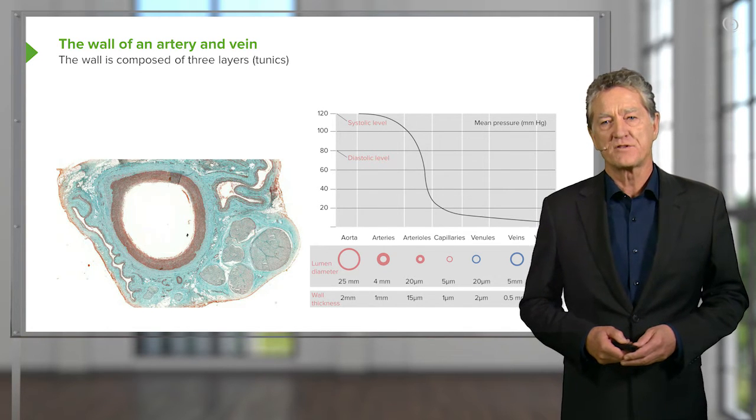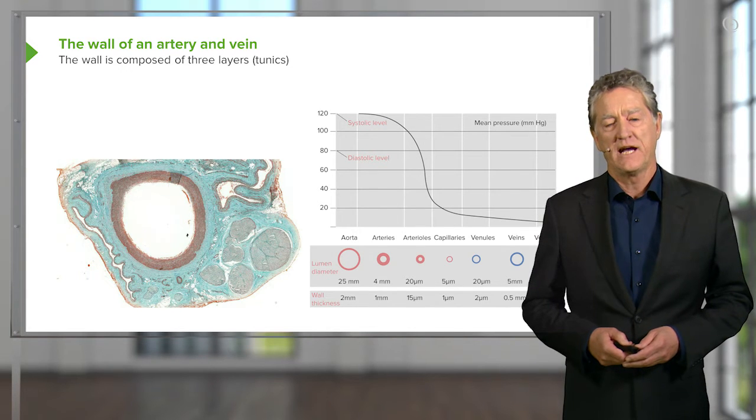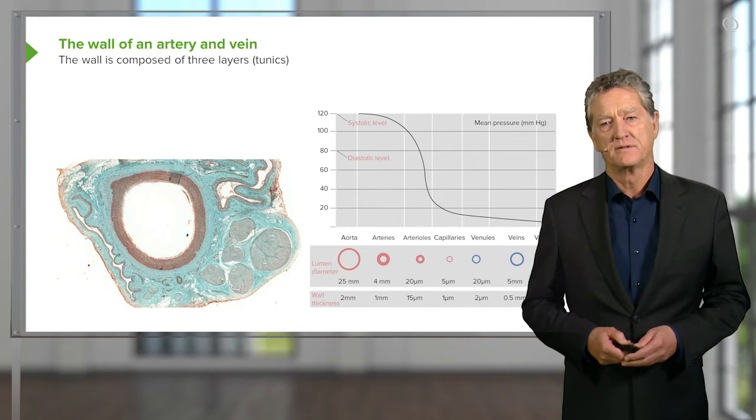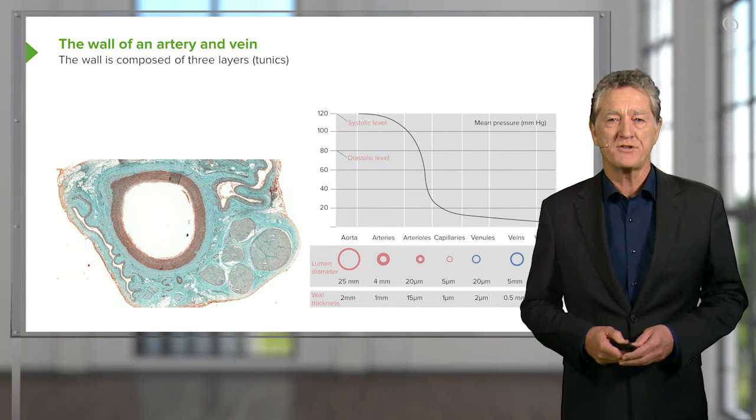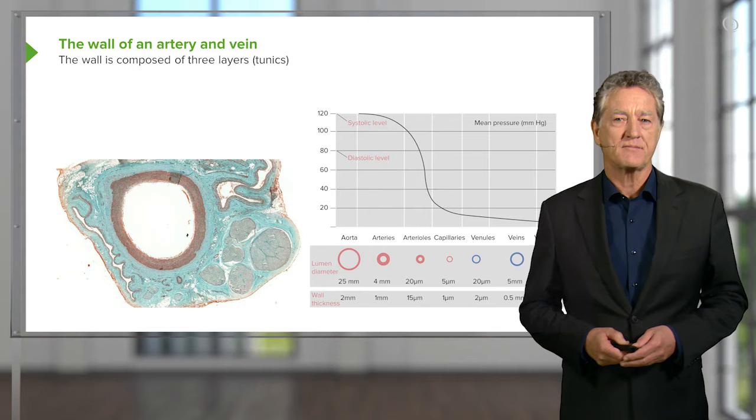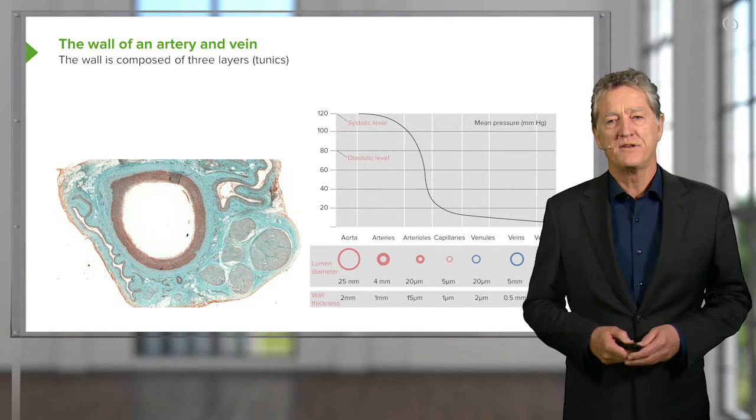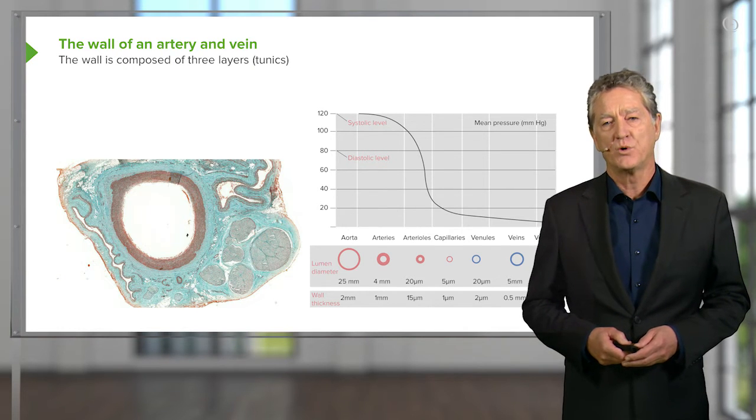But then the arteries and small arterioles have a thick wall and they're circular in profile. That's because they have high pressure inside them as they pass blood down to all the tissues in the organs of the body.